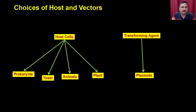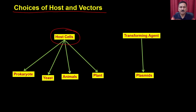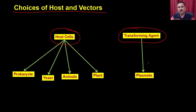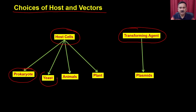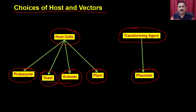Under the in vitro system, you have two different species. One is the host cells which you are going to use as the protein production machinery, and then you also have the transforming agents which provide the instructions. As far as the host cell is concerned, you have multiple choices: you can use the prokaryotic system such as E. coli or other bacterial cells, or the eukaryotic system such as yeast, animals, and plants. As far as the transforming agent is concerned, you can use different types of plasmids, mammalian vectors, or yeast vectors.